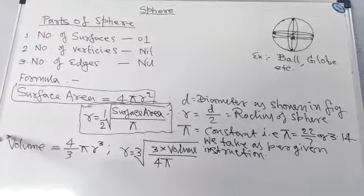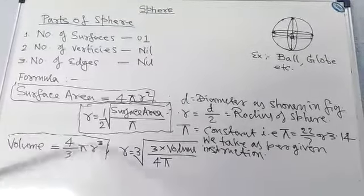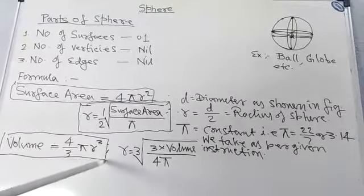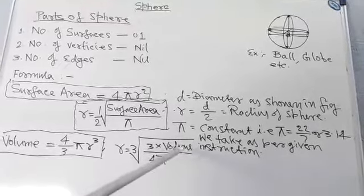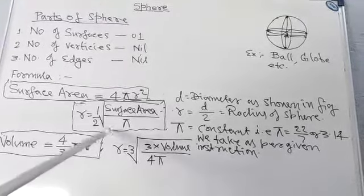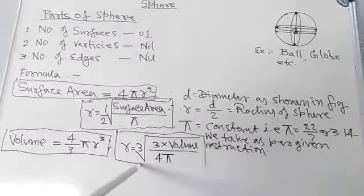And now, the volume. Volume is equal to what? This volume is equal to 4/3 πr³. And r is equal to cube root of (3 × volume / 4π). So that this is the one thing. It is the very simple of the formulas.